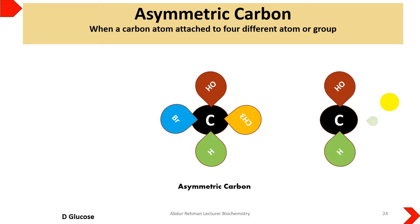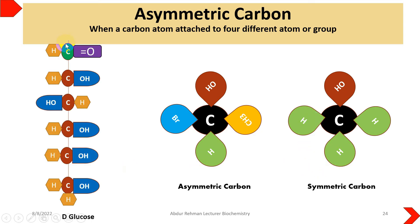If we look at the structure of D glucose, it contains four asymmetric carbon atoms because all these carbons are bonded to different atoms. The number of asymmetric carbons determines the possible isomers of a compound.